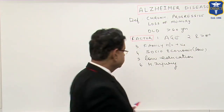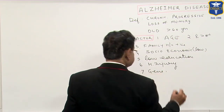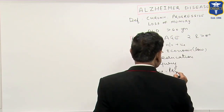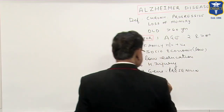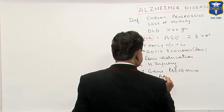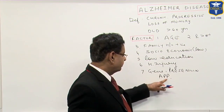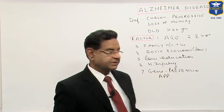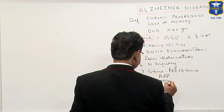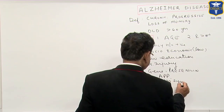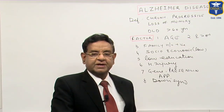Certain genes are responsible for this. Some of them are presenilin genes, APP genes, and amyloid precursor proteins. It is also common in Down syndrome. These are some of the predisposing conditions.